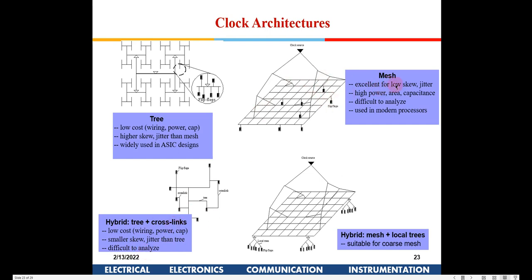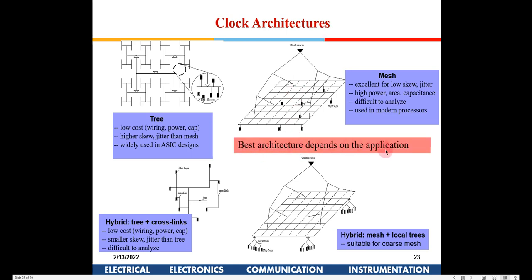A mesh topology gives very low skew but the penalty is power and area — it is used in modern processors. A hybrid mesh-plus-tree uses a coarse mesh with local trees at points where flip-flop concentration is high, avoiding some mesh disadvantages. The best architecture depends on the application — there is no single best topology.